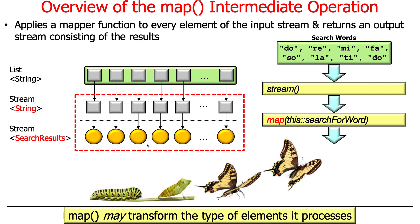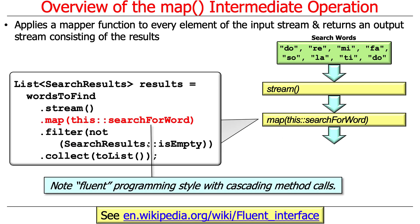You don't have to transform types — you could do a string-to-string transformation, for example going from uppercase to lowercase. But you can do type transformations. We have the map operation as a fluent, cascading set of method calls. So that's map — very straightforward, kind of the workhorse method in Java streams.